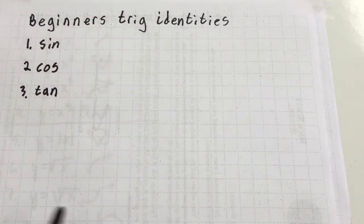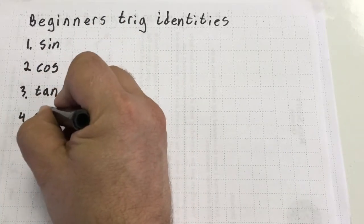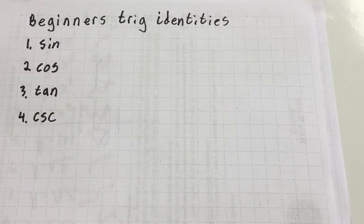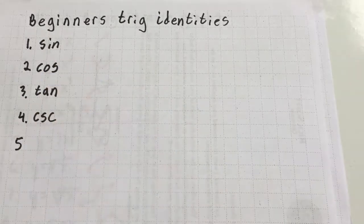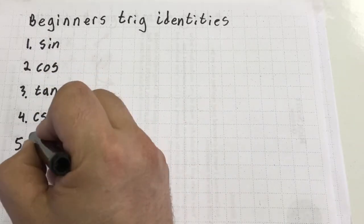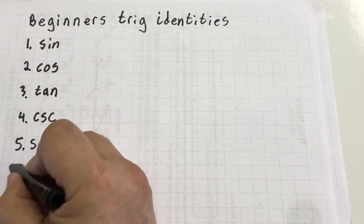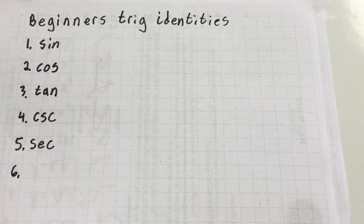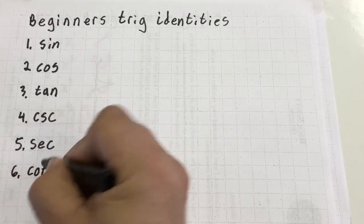My order is non-specific, but I always like to do cosecant next. And then after cosecant, my fifth trig function would be secant. And then my sixth trig function would be cotangent.